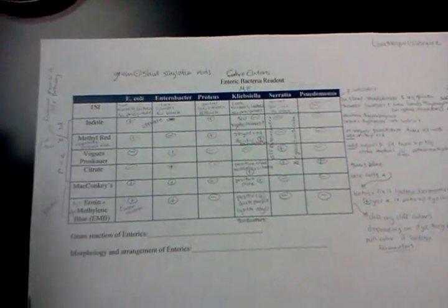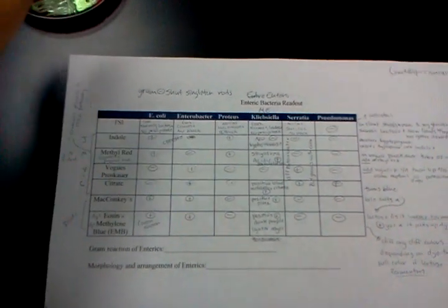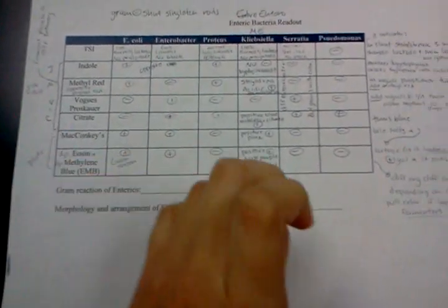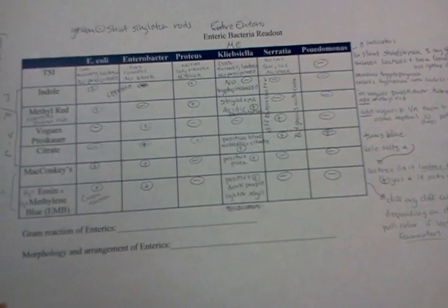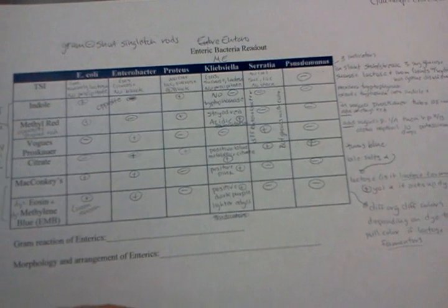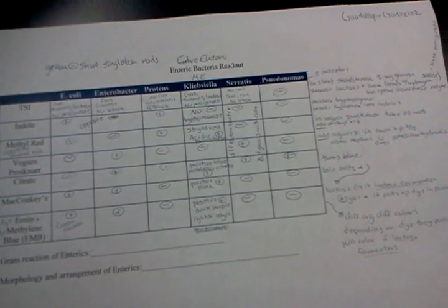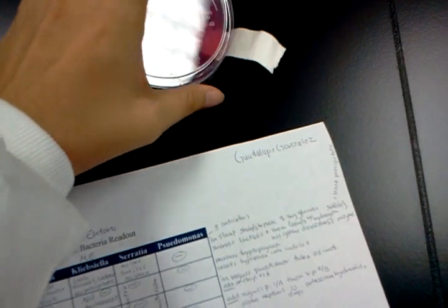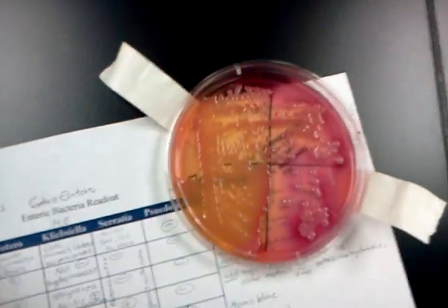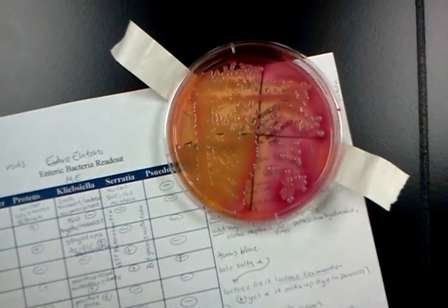We have McConkey's, a streak plate. McConkey's has bile salts as well as dye inside of it and it is positive if the colonies take up the dye. So our positive McConkey's is here, took up the dye, it turned pink.